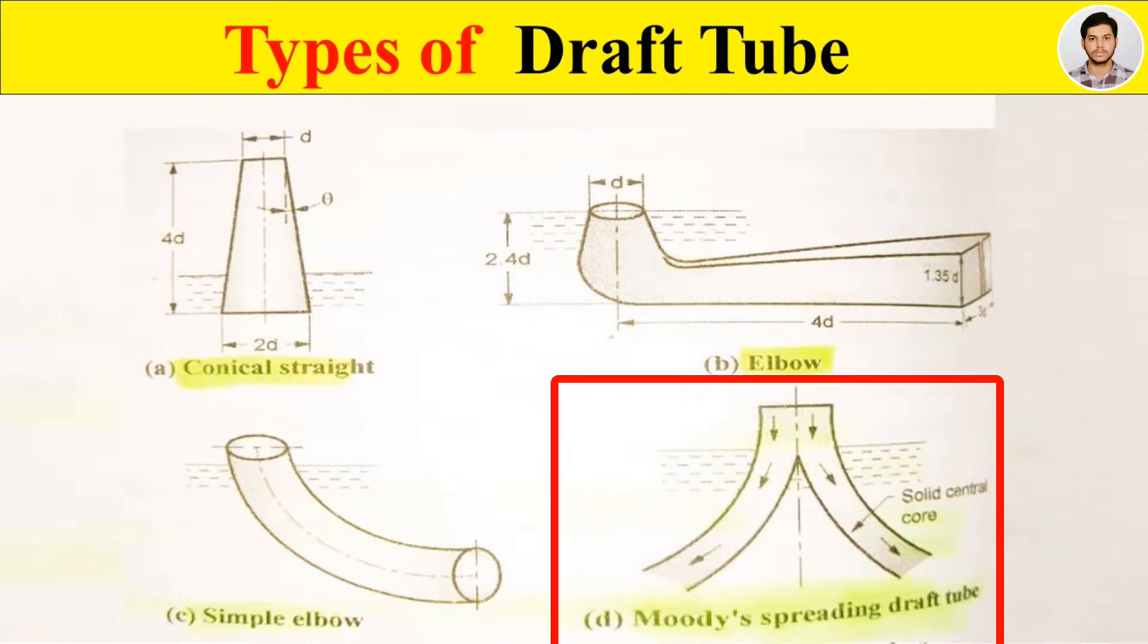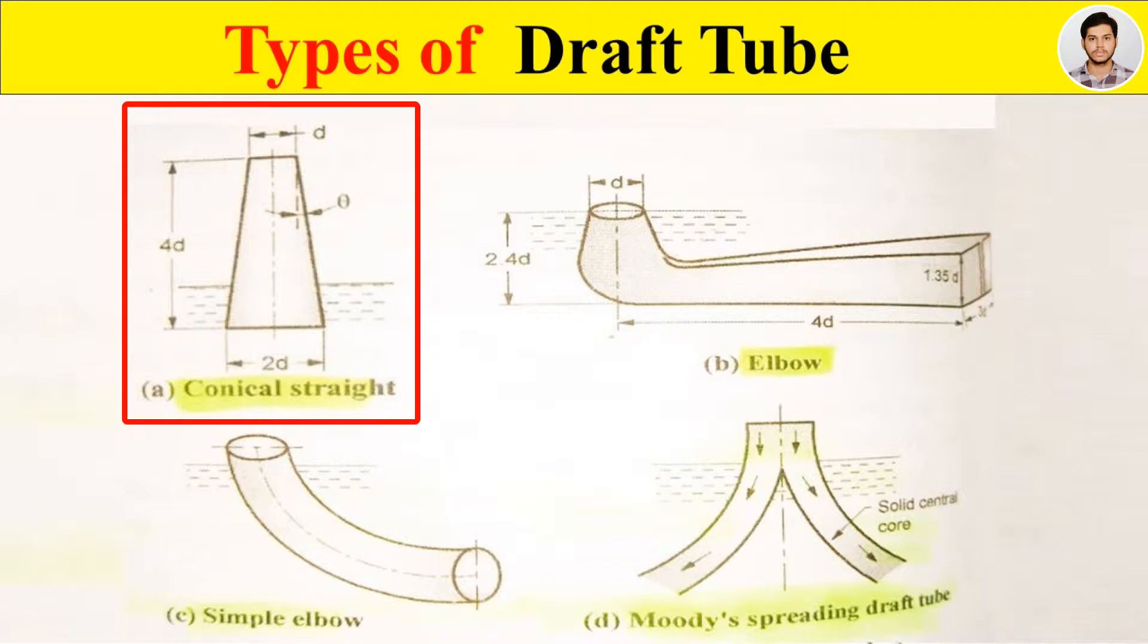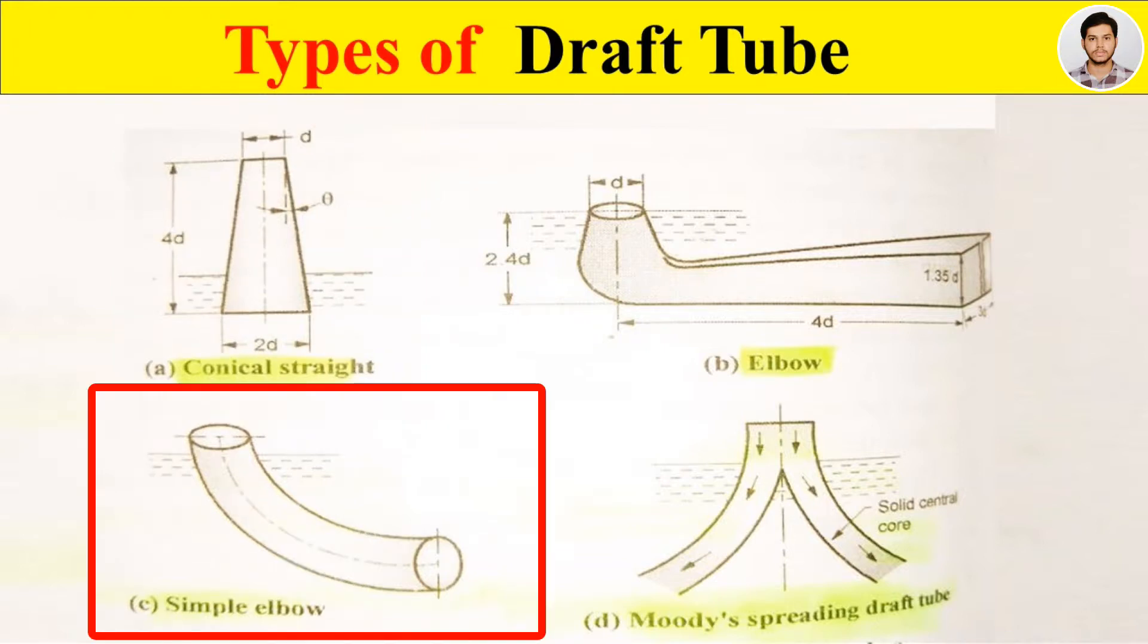First we see conical draft tube, an earlier design of draft tube with conical straight divergent shape. The taper angle of the divergent portion of the tube is of great importance. If the taper angle of 20 degrees is large, it will cause the separation of flow from the walls of draft tube. In case the taper angle is small, the length of draft tube needed will be long, causing higher friction loss. It is fabricated out of mild steel plate. It has efficiency of 85 to 90 percent.